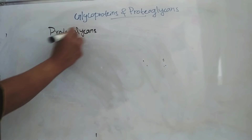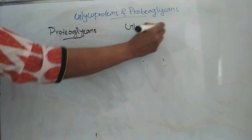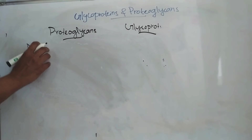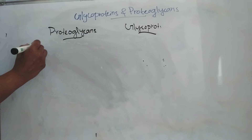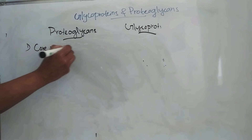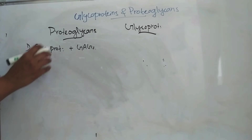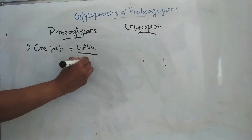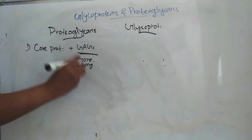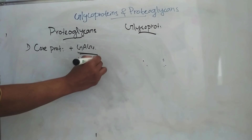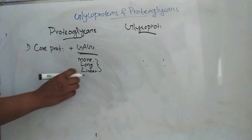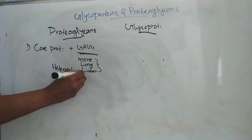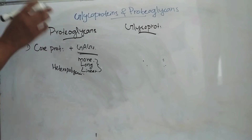Now the differences between glycoproteins and proteoglycans. Coming to structure: in proteoglycans, the core protein is commonly attached to one or more glycosaminoglycan chains. The carbohydrate chain — the glycan part — will be more in amount. It will be long and linear, meaning unbranched. The carbohydrate part will always be a heteropolysaccharide in the case of proteoglycans.